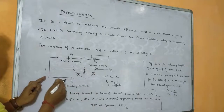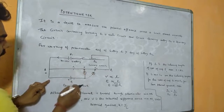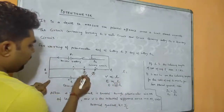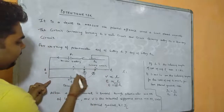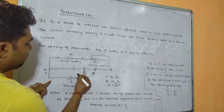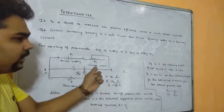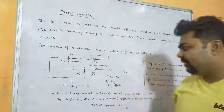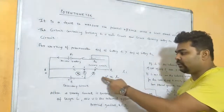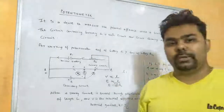The three arrows in the diagram represent three different positions of the jockey, not three separate circuits. First the jockey is placed at point P1, giving length l1; then at P2. We slide from A to B to get the balance point. At the balance point, that length equals V (the potential difference). We can also calculate the potential gradient k.